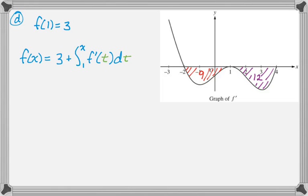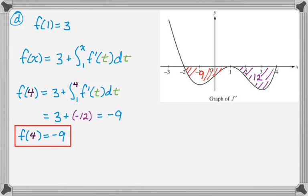And now I have to find f of 4 and f of negative 2. So f of 4, 3 plus the integral from 1 to 4 of f prime of t dt. So that's going to be 3 plus 1 to 4 is going to be negative 12, and that's going to be negative 9. So f of 4 is negative 9.